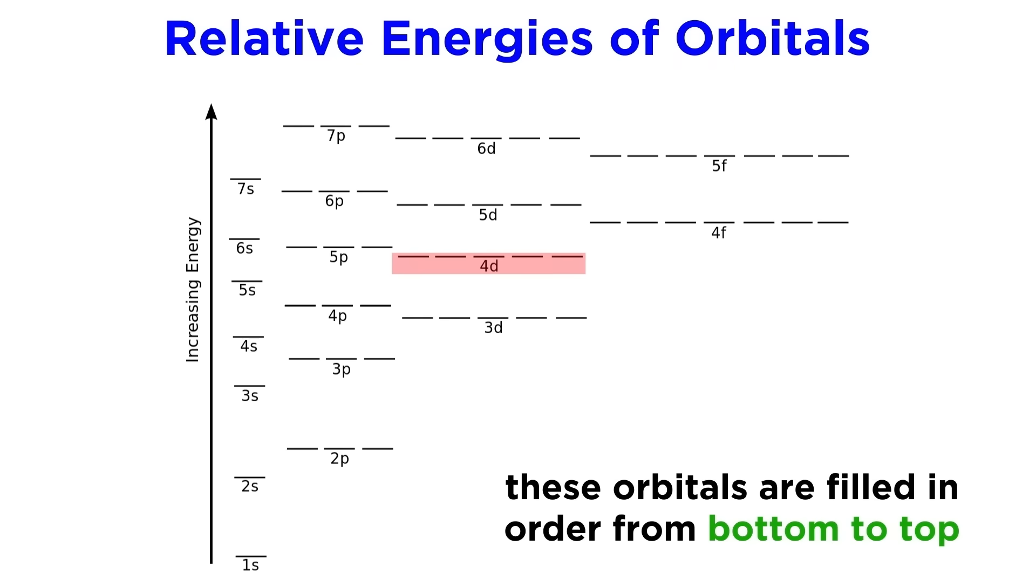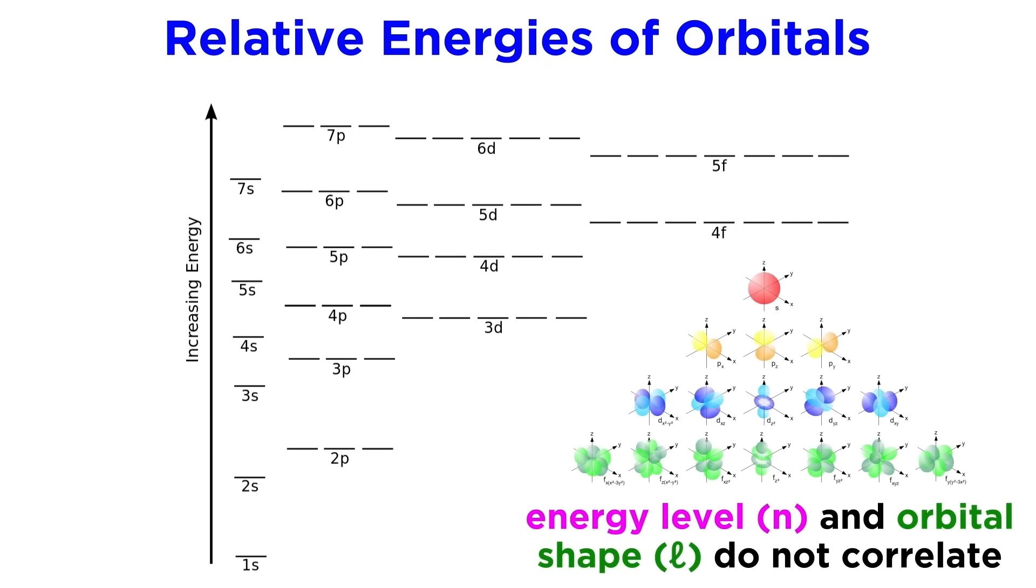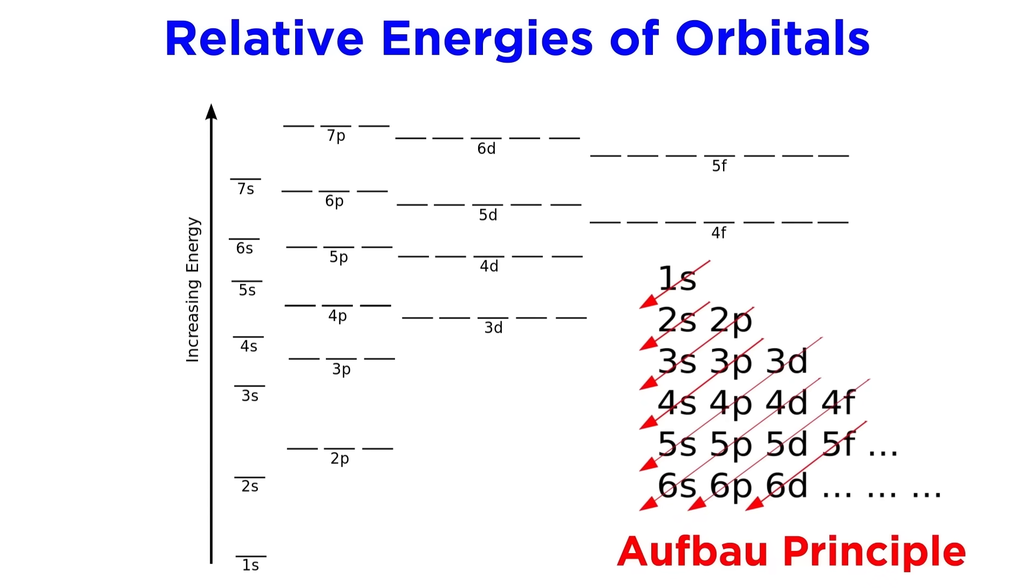It may seem strange that we fill the 4d, then the 5p, then the 6s, but this is because the two trends determining orbital energies, the n value and the l value, do not directly correlate, and this is the order that orbitals are filled according to both theoretical calculations and experimental observations. This order in which the orbitals are filled is called the Aufbau principle.